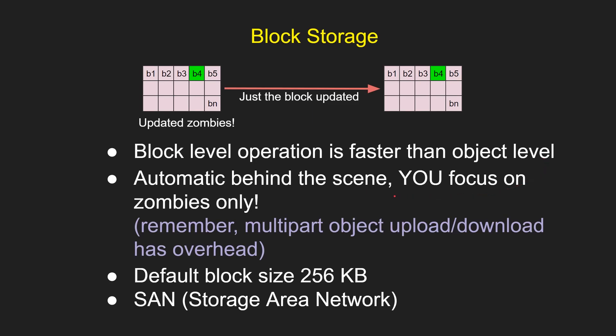All this block level upload and download is automatic behind the scenes — you focus on your business problem. Remember, for object multi-part upload and download, you had to coordinate all that stuff, but here it is all done for you. Also, the default block size is 256 kilobytes, which is much smaller than a part in multi-part. This is associated with SAN, or storage area network.